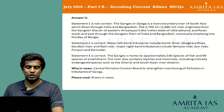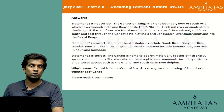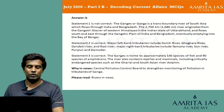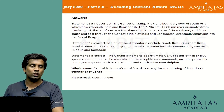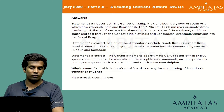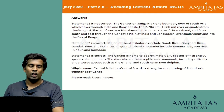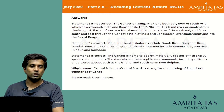Statement 1 is not correct because the Ganga is a transboundary river of South Asia which flows through India and Bangladesh. It originates from the Gangotri glacier in the Indian state of Uttarakhand and flows south and east through the Gangetic plain, eventually emptying into the Bay of Bengal. The major left bank tributaries include Gomti, Ghagra, Ghantaki and Kosi rivers. The major right bank tributaries include Yamuna, Saan, Punpun and Damodar.